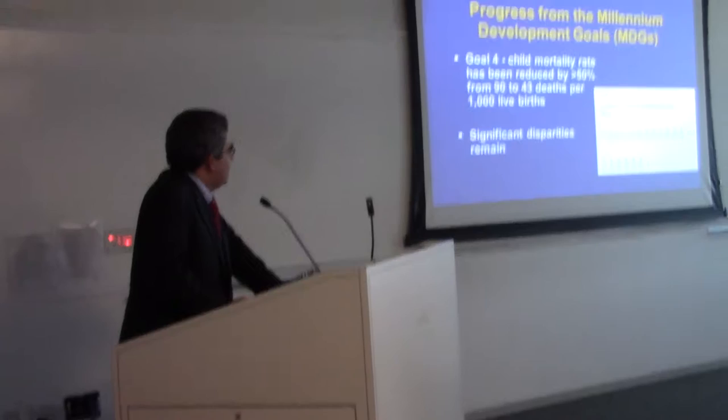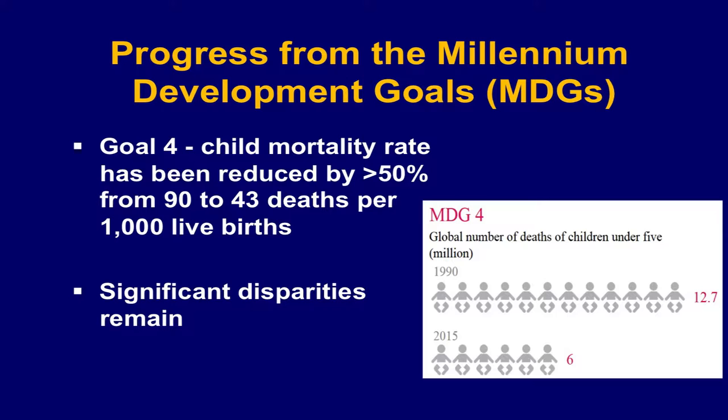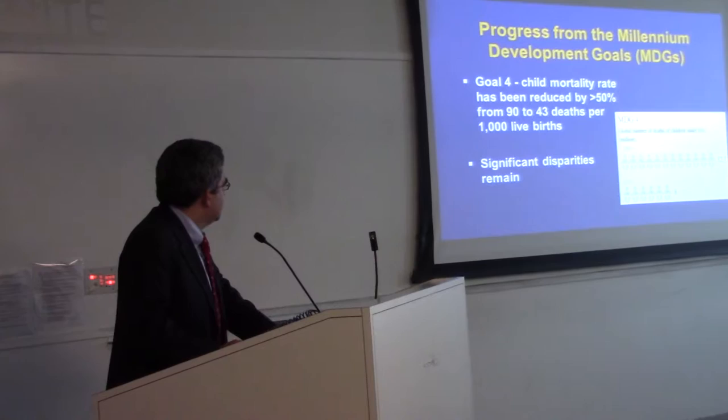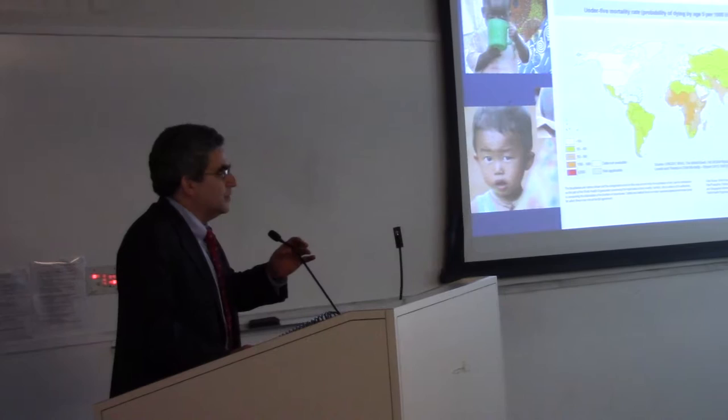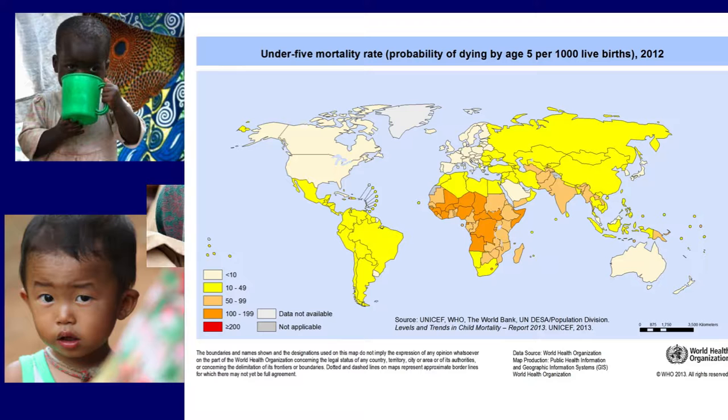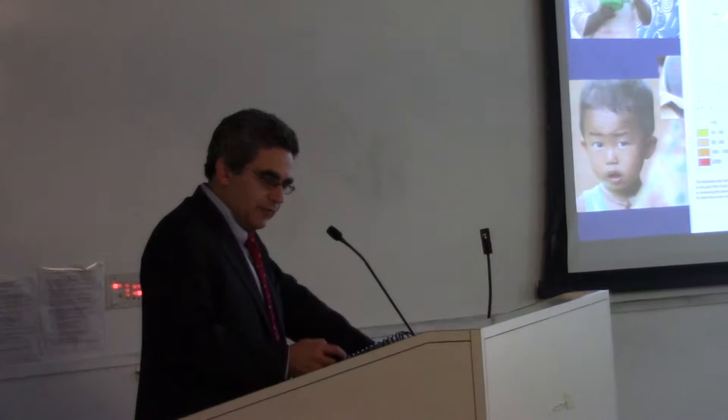Goal 4, which was reducing childhood mortality, has come down by more than 50% in the 15 years of the MDGs, but there are really significant disparities in where the chance of dying still exists. The darker the country, the higher the rate of under-5 mortality. Although we've improved, there's still a long way to go.